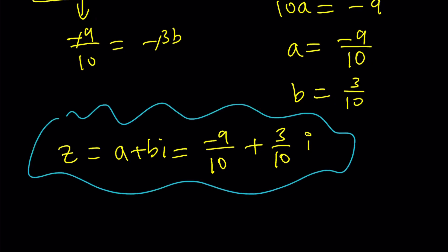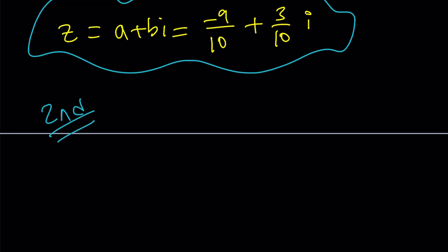Now, let's go ahead and take a look at the second method. Again, the first method is how you should not solve this problem, it's kind of painful. The second method is basically using distributive property. Let's go ahead and distribute everything. So, 3Z plus ZI plus 3 plus I equals I.